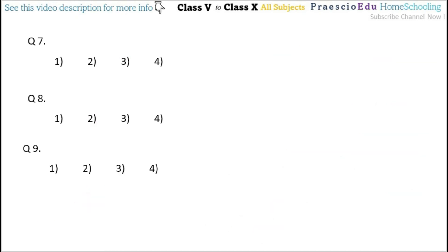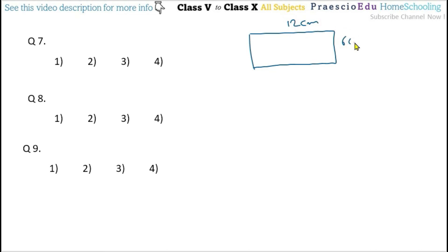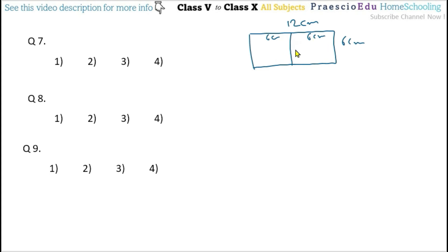Question number 7: a rectangle having length 12 cm and breadth 6 cm is cut in the middle to form 2 squares. So the rectangle is 12 cm long and 6 cm wide. Cutting it in the middle gives two pieces of 6 cm each, forming two squares. The question asks for the difference between the perimeter of the rectangle and the sum of the perimeters of the two squares.